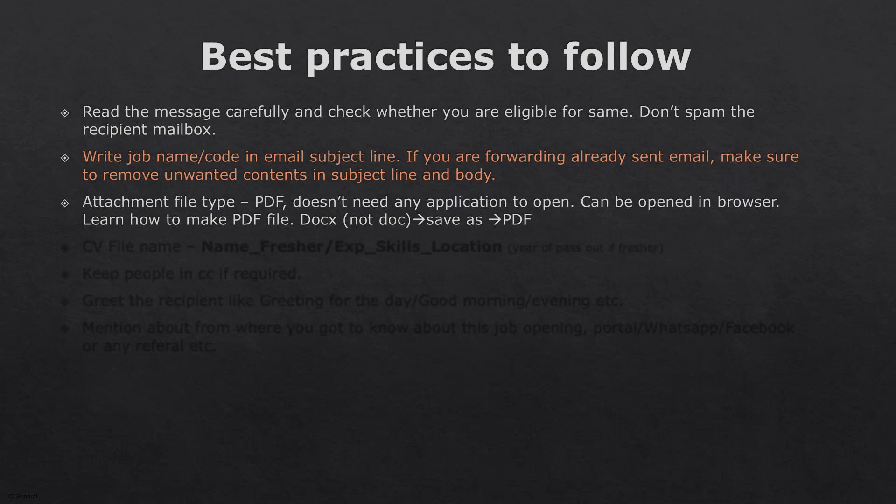For the attachment file type, it should be PDF. Why PDF? Because PDF does not need any special application to open — it can be opened in a browser as well. To make a PDF: open your Word file with the .docx extension (not .doc — if it's .doc, first save it as .docx), then do 'Save As PDF.' There you go — you have your PDF file ready to share.